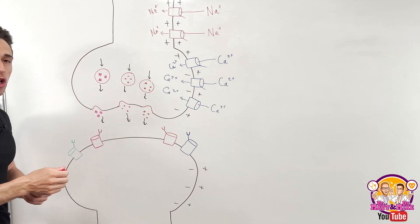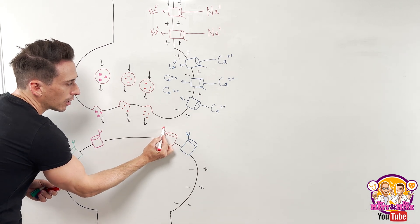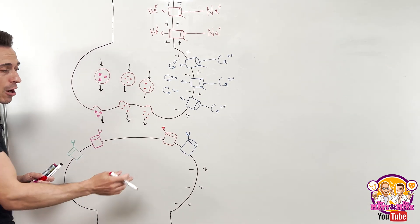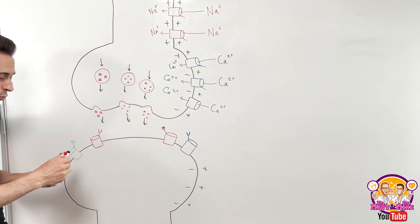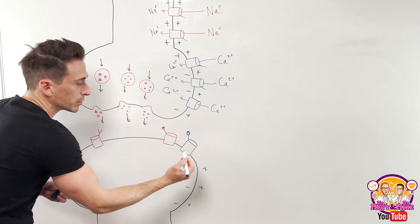Now, if it's an excitatory neurotransmitter, it will bind either to receptors that are associated with sodium channels, or it will bind to receptors that are associated with calcium channels.